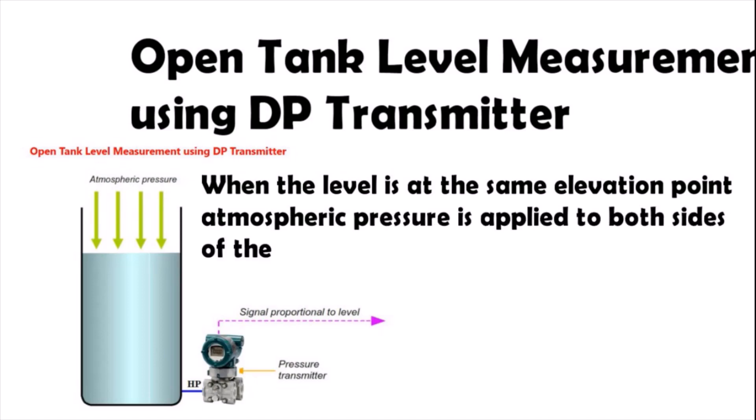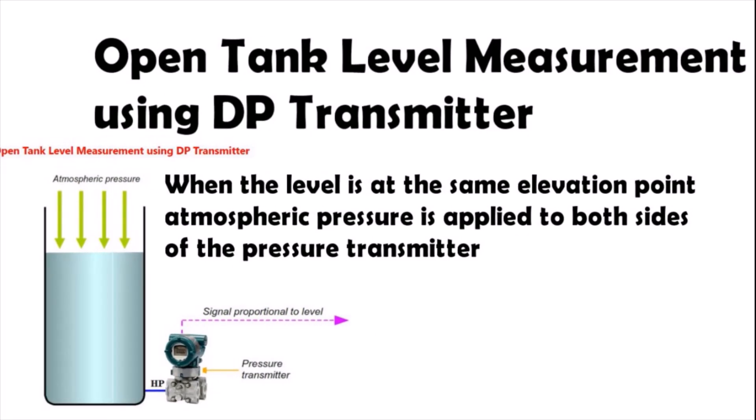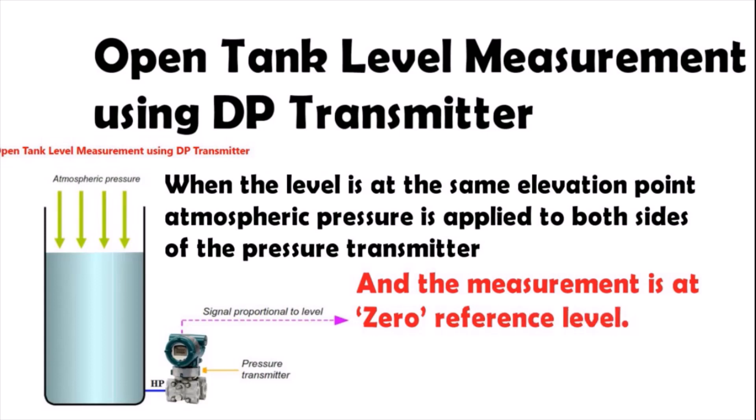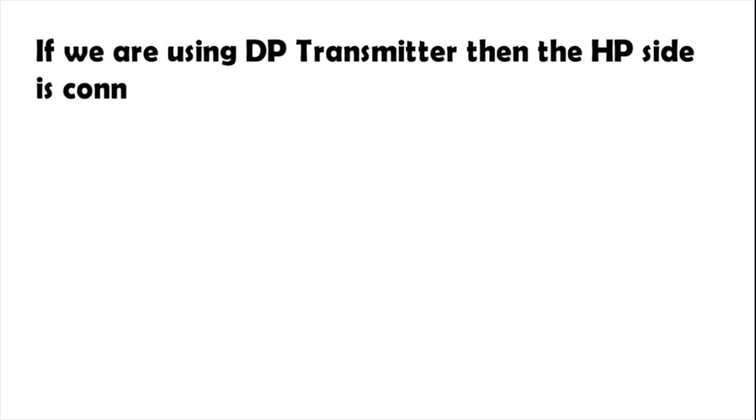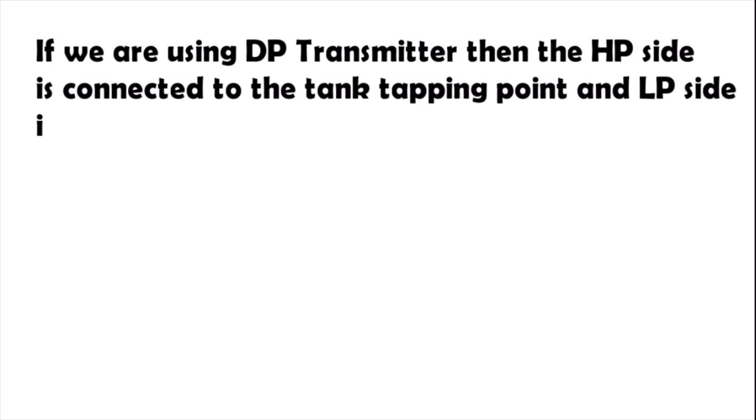is applied to both sides of the pressure transmitter and the measurement is at the zero reference level. If we are using DP transmitter, then the HP side is connected to the tank tapping point and LP side is vented to atmosphere.